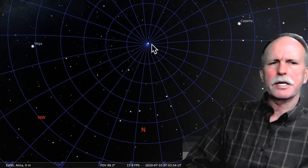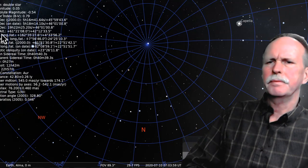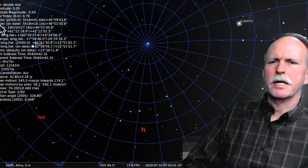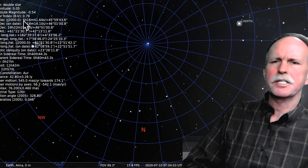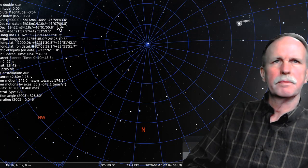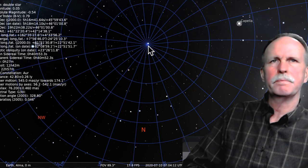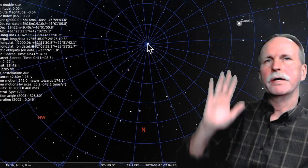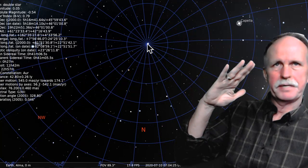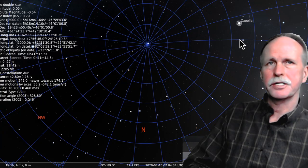We're going to find a star called Capella. Looking at the information on Capella, we see that its right ascension is 5 hours and 16 minutes, and the declination is almost 46 degrees. As we said, the northern celestial pole is at 90 degrees. So we're going to drop the telescope down until we get to about 46 degrees, then look for 5 hours and 16 minutes right ascension.